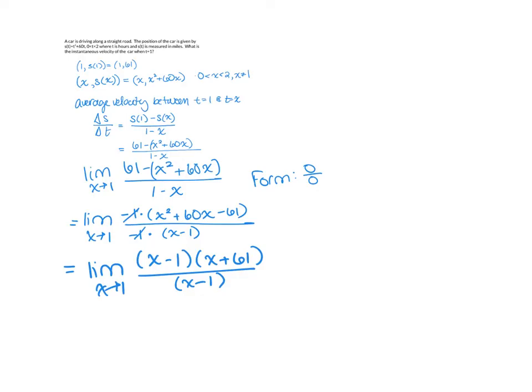Now, remember, we wouldn't be able to just plug in right here, but since it's a limit, and we only care about nearby values, we can cancel those x minus 1's. And so now we're taking the limit as x goes to 1 of x plus 61, which is 62. So that tells us that the car was going 62 miles per hour when t equals 1.